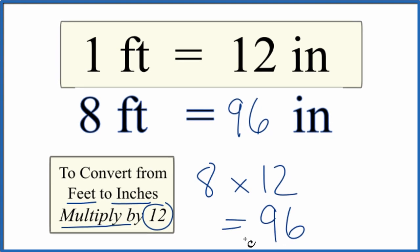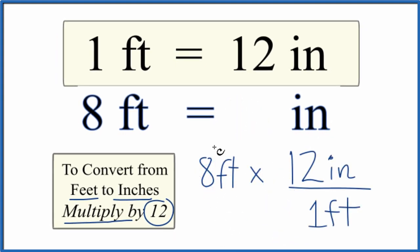Let's do this again but put the units in. So we have our 8 feet here. We multiply it by 12, but 12 inches. And there are 12 inches in one foot. So 12 inches per foot. Now we multiply.